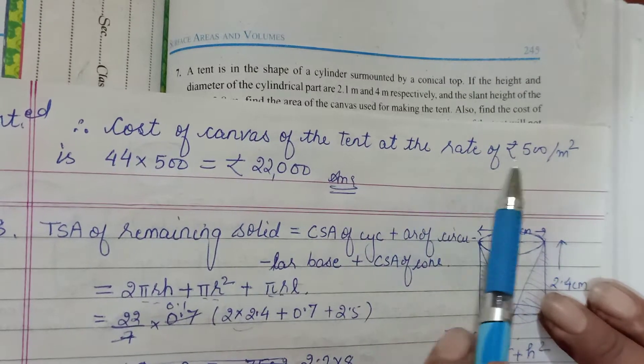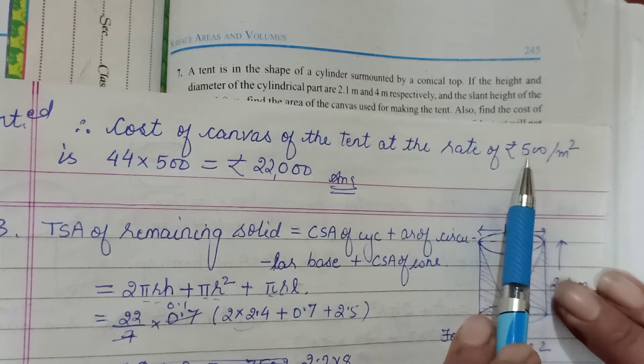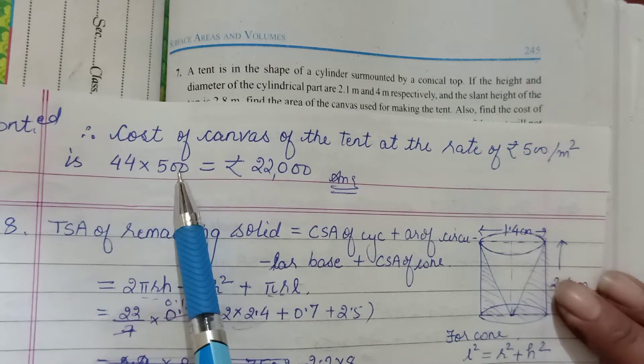They had also asked you to find the cost. So for the cost, multiply by the rate - 1 meter square costs 500 and we had 44 meters, so 44 into 500. Total cost would be 22,000.